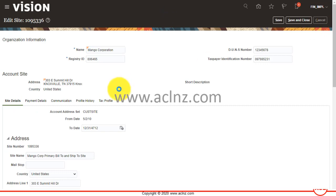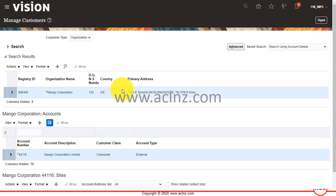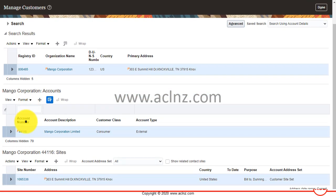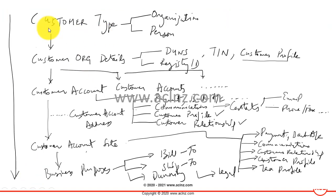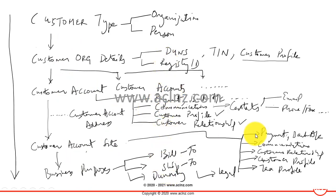This is the customer definition, and as I've explained, there are majorly three levels of information: the customer organization level, the customer account level, and the third is the site level. You start by defining the customer type, then the customer organization details, then the customer account details, then the customer account site level details — and within each of these levels you can add a lot of other information.